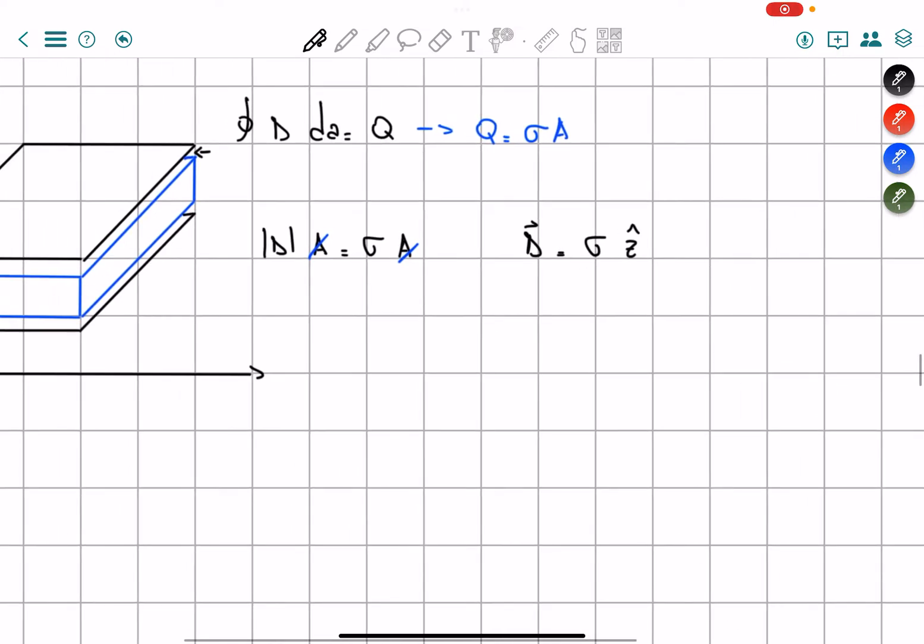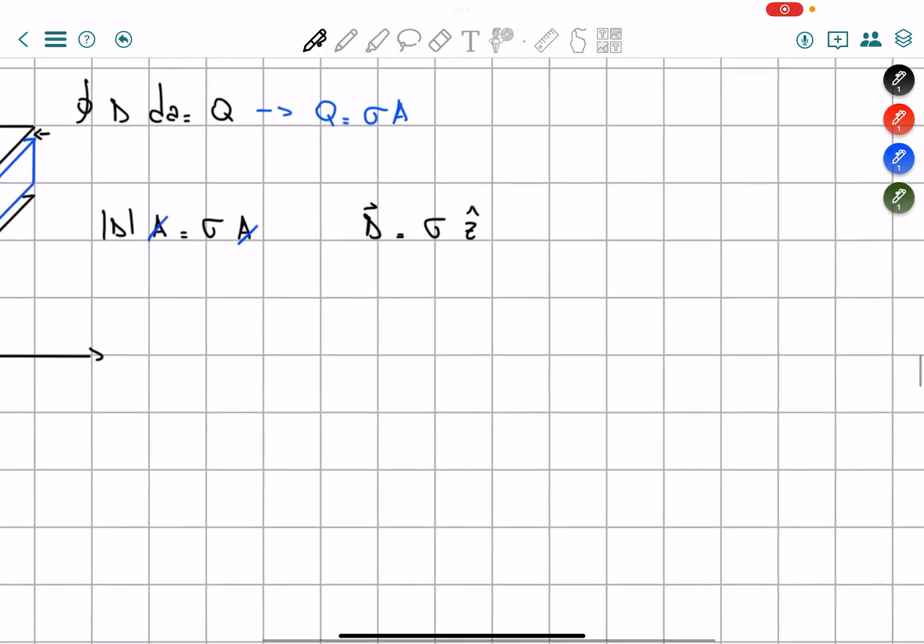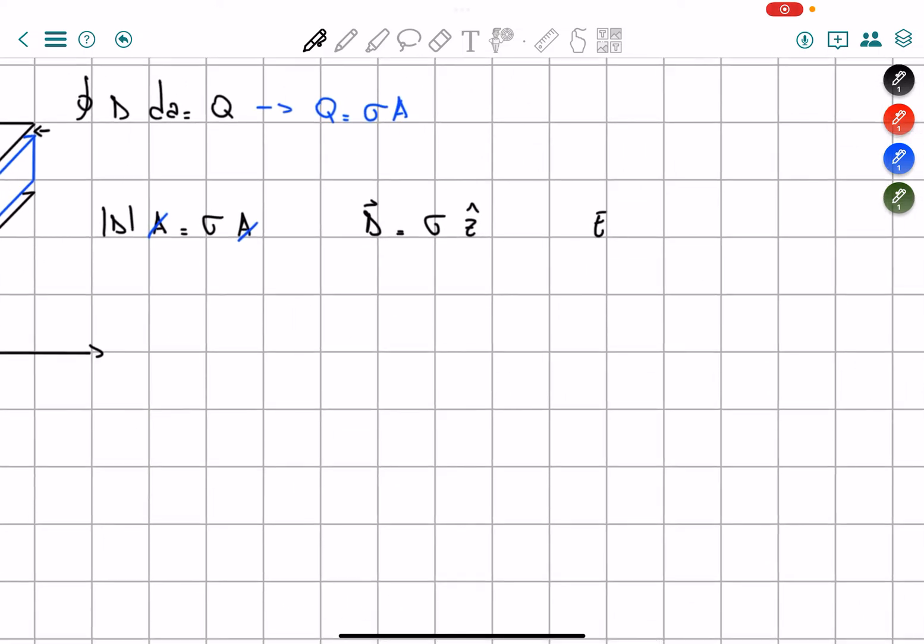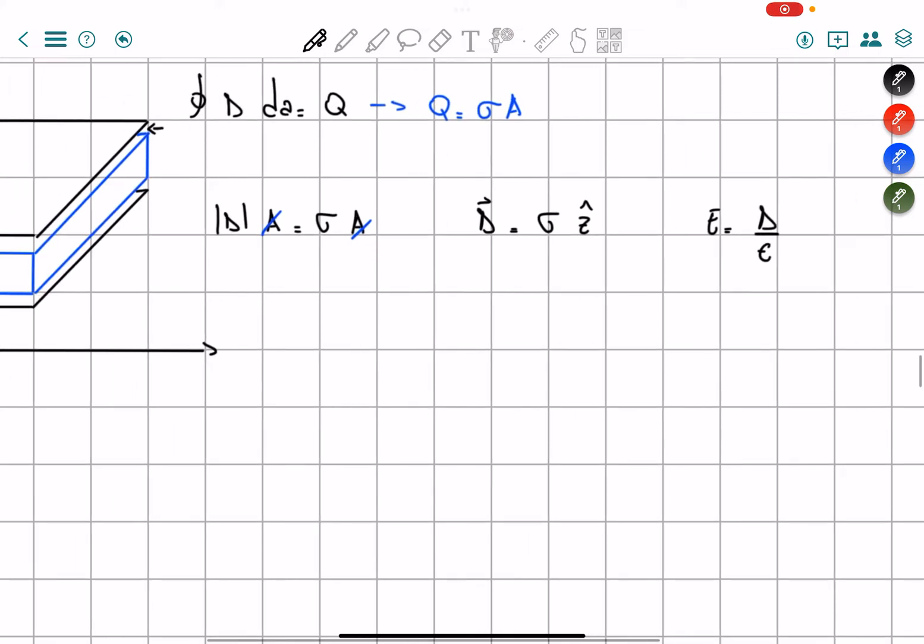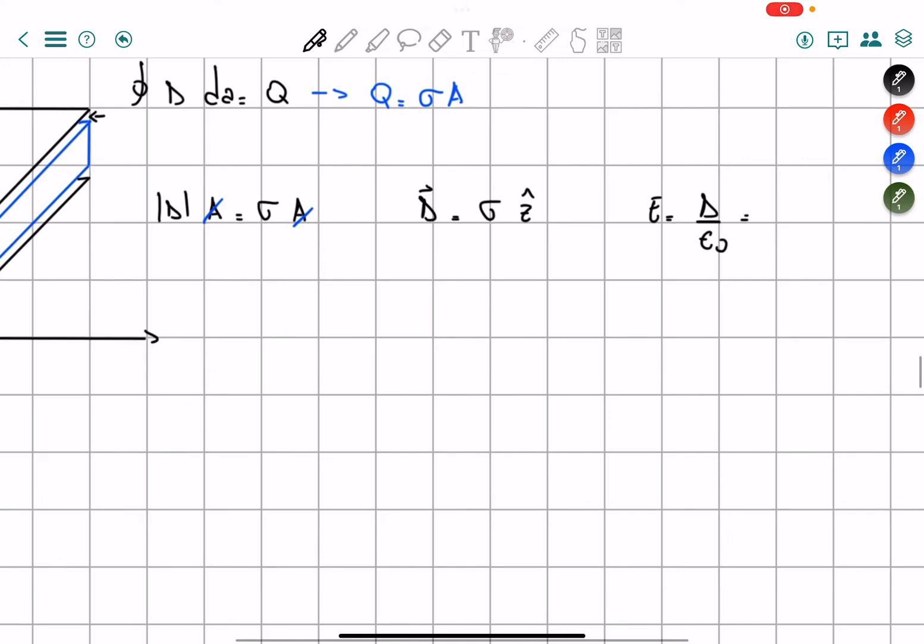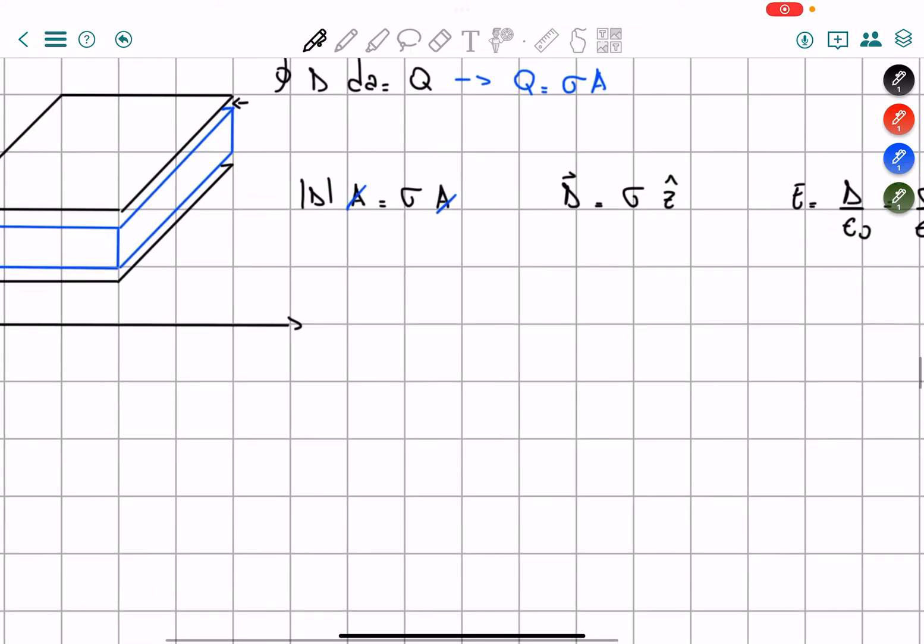Now, I will find E for this area. So I know that E is equal to D divided by epsilon, which in our case is equal to empty space. So epsilon not, therefore is equals to our surface charge divided by epsilon not, which makes sense.